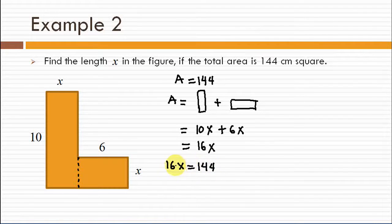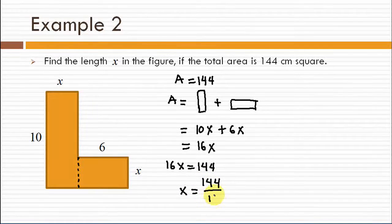Dividing both sides by 16, we have x equals 144 divided by 16 which is equal to... 144 divided by 16 is 9. Therefore, x is equal to 9.